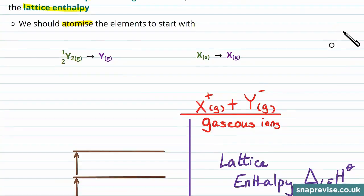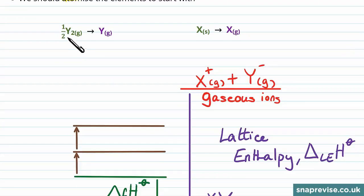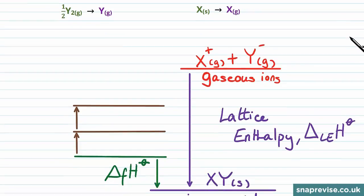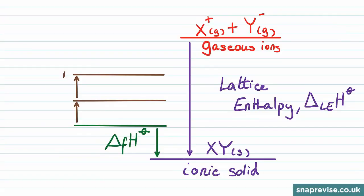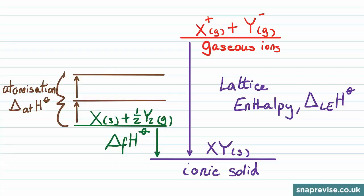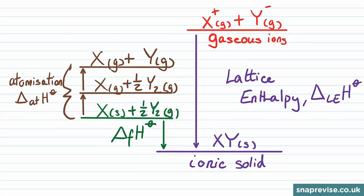These equations show what we mean by atomization, where we take the elements in their standard state and convert them to monatomic gases. In the diagram for the Born-Haber cycle we show two individual steps for the atomization of X and Y. So we start off with the elements in their standard states as before, and then firstly we'll atomize X. So that goes from being a solid into a gas, and Y will stay the same for this step.